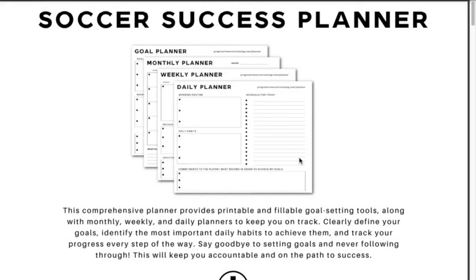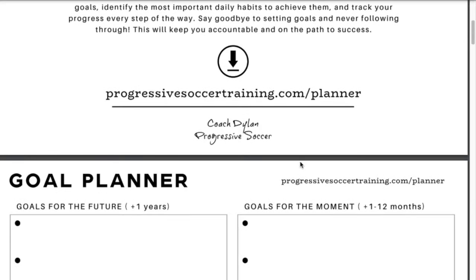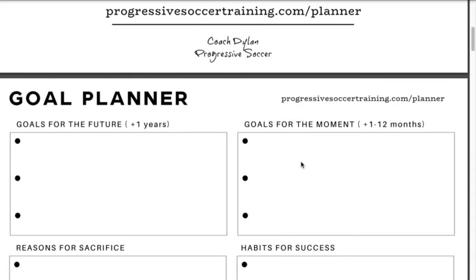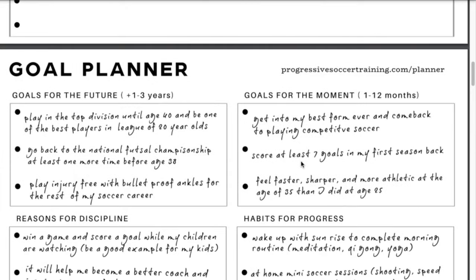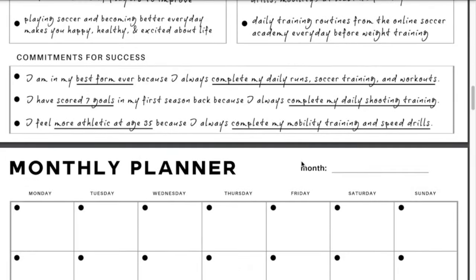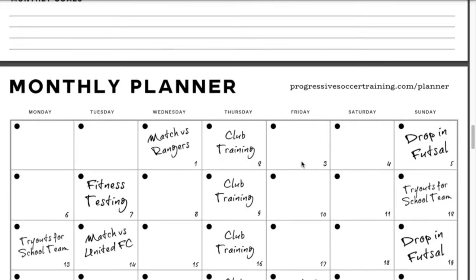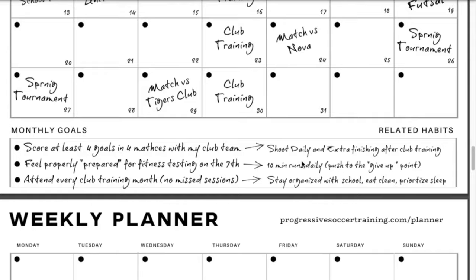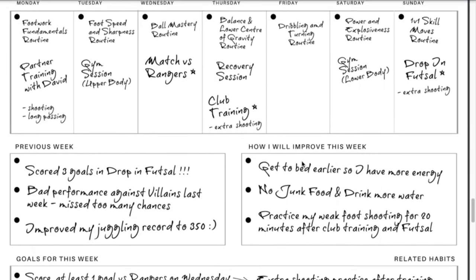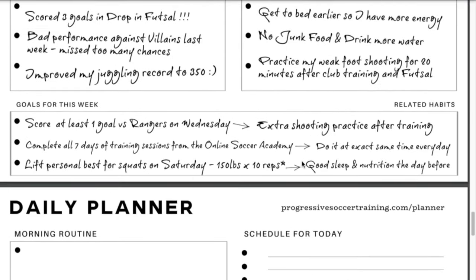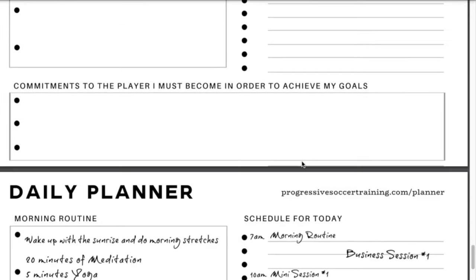The Success Planner is the ultimate tool for players who want to improve their skills, win more games, and get more respect from their coaches and teammates. With this planner, you'll learn how to set achievable goals, prioritize your time, and establish the daily habits necessary to take your game to a whole new level.